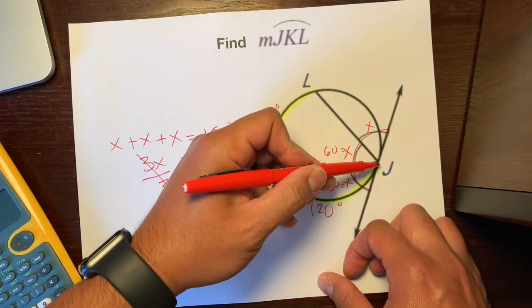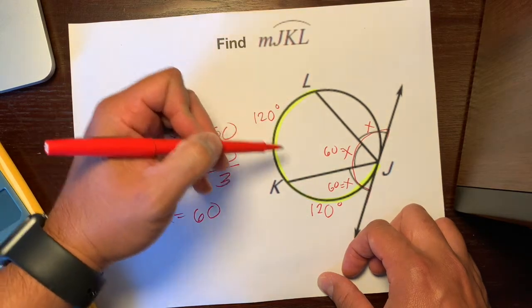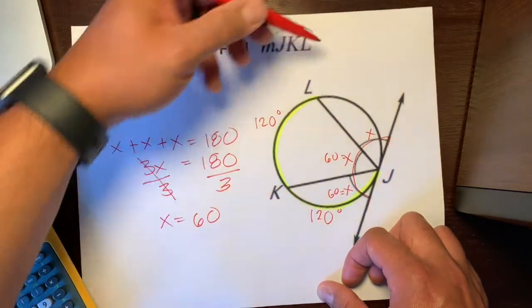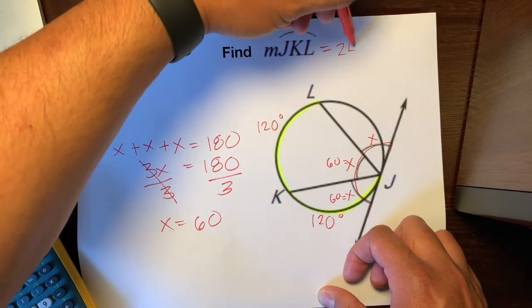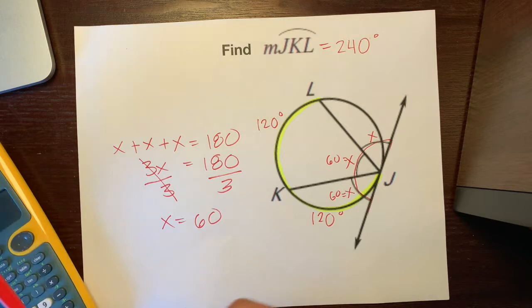And so we want J to K to L. So all we're added those up. Hope that helps.